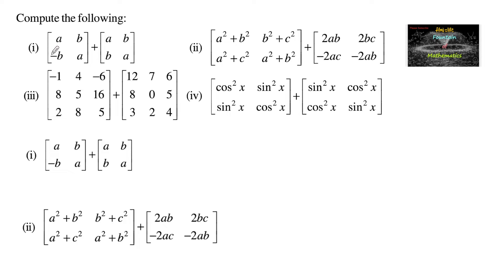Compute the following. First one: matrix A, B, negative B, A plus A, B, B, A. Here both the matrices are of the same order, 2 by 2. So the corresponding elements can be added.